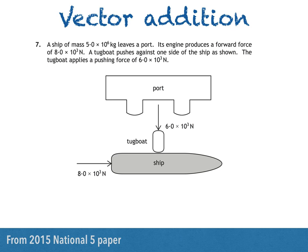Here's an example from the 2015 National 5 paper. A ship of mass 5.0 × 10⁶ kg leaves a port. Its engine produces a forward force of 8.0 × 10³ N. A tugboat pushes against one side of the ship as shown. The tugboat applies a pushing force of 6.0 × 10³ N.